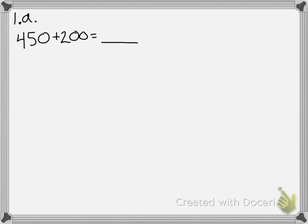This is my end of module assessment review — a slightly modified version of the test we're going to be taking. We have 450 plus 200 and we're supposed to solve using a written strategy such as a tape diagram, number bond, the arrow way, vertical form, or chips on a place value chart.